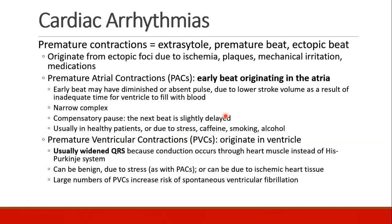Another thing we may see frequently are premature contractions, called extrasystoles, premature beats, or ectopic beats. They originate from some ectopic focus somewhere other than the SA or AV node, and can occur due to ischemia, plaques, mechanical irritation, or medications. PACs are premature atrial contractions — an early beat originating in the atrium. It may have a diminished or absent pulse because the heart hasn't fully filled, so stroke volume will be low. They're narrow complex because they still conduct through the AV node and His-Purkinje system, and they cause a compensatory pause where the next beat is slightly delayed. These usually happen in healthy patients, though stress, caffeine, smoking, or alcohol can increase their frequency.